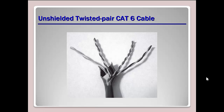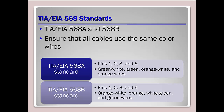Here's another example of a twisted pair Cat6 cable. For the standards and wiring, there's TIA/EIA 568A and 568B. The difference is in the way they're wired — pins 1, 2, 3, and 6 differ between A and B: in A it's green/white-green/orange/white-orange, and in B it's different.